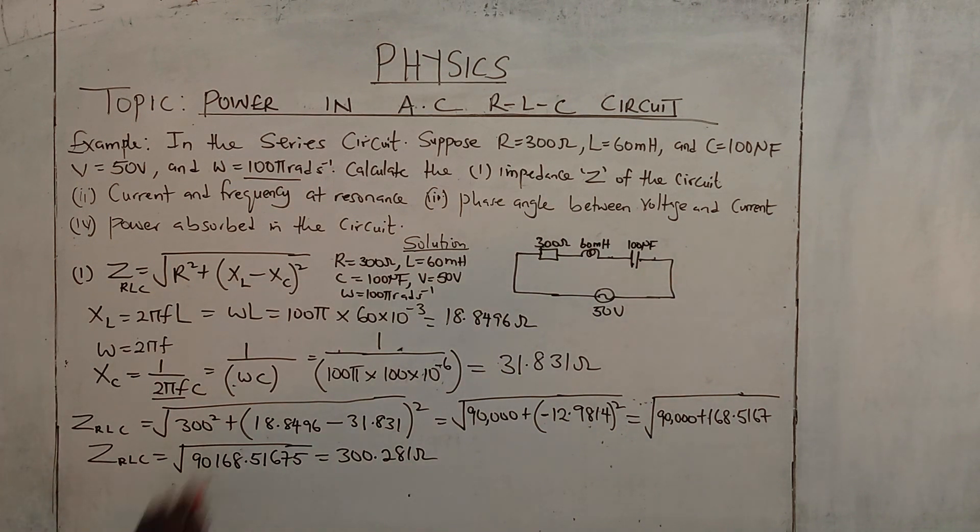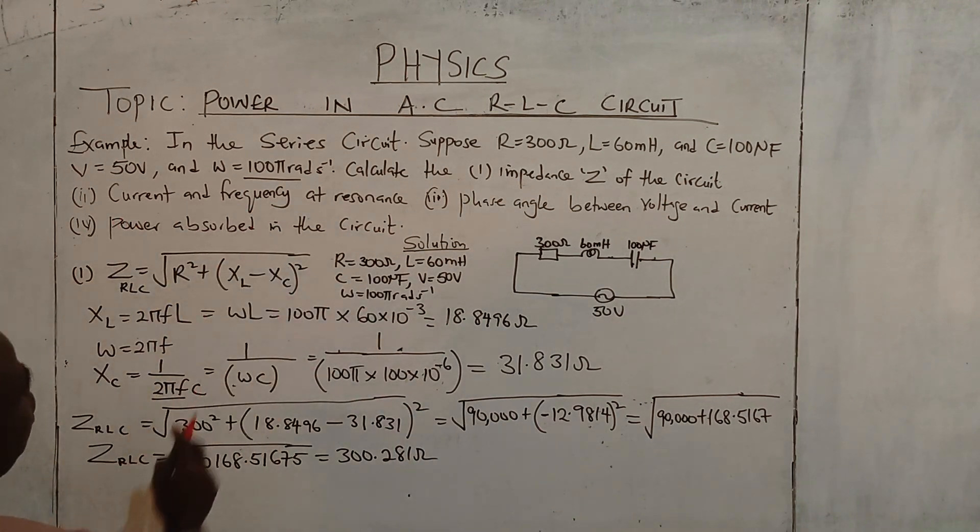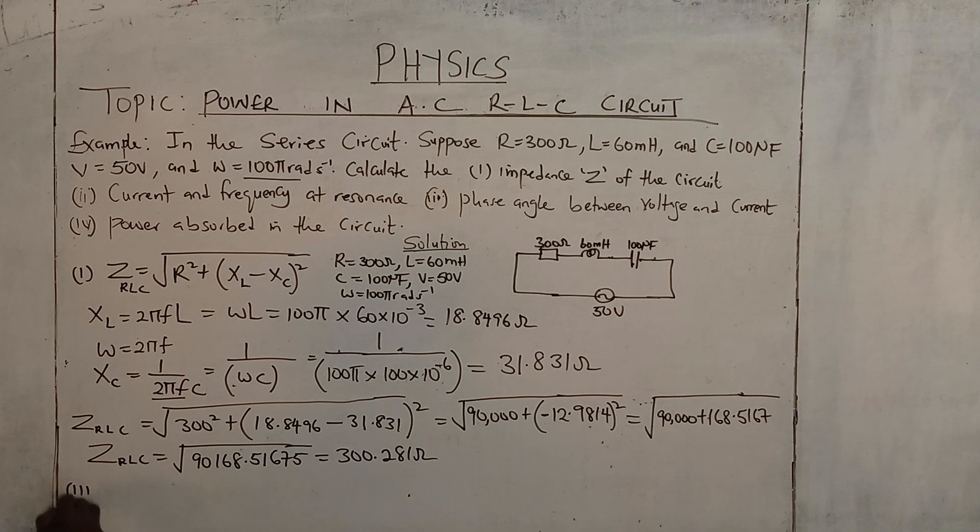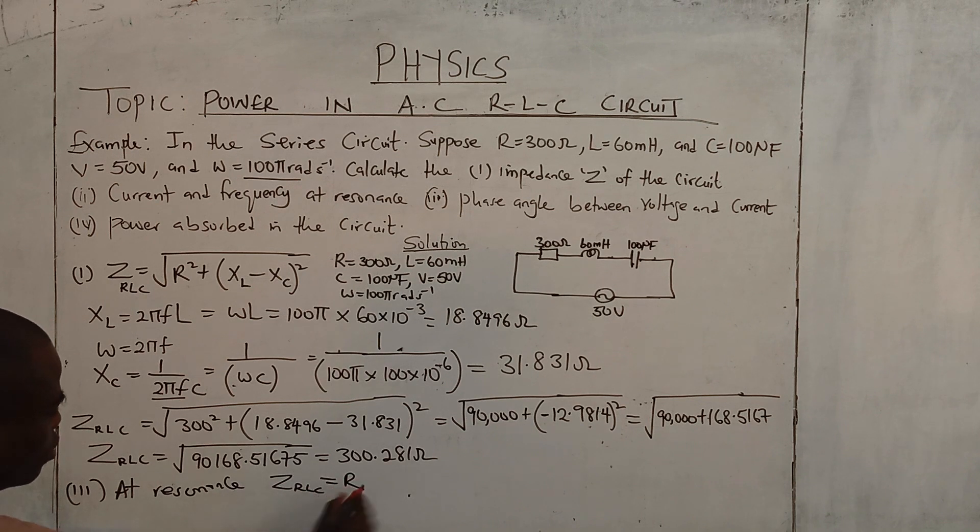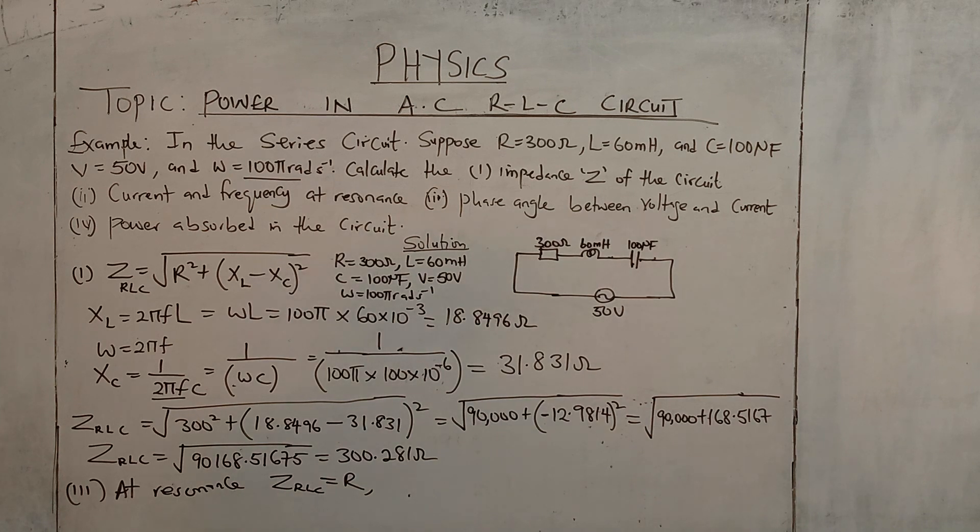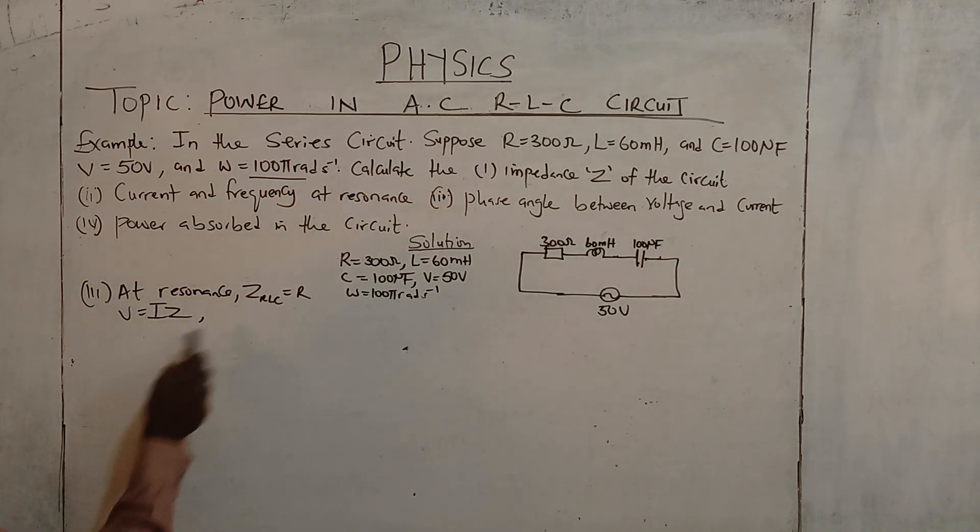The current and frequency at resonance. At resonance Z RLC, that's impedance, is equal to R. That's the rule at resonance. In that case let us now do for our currents. V equals to I times Z. Now in that case I mean that Z is equal to R.